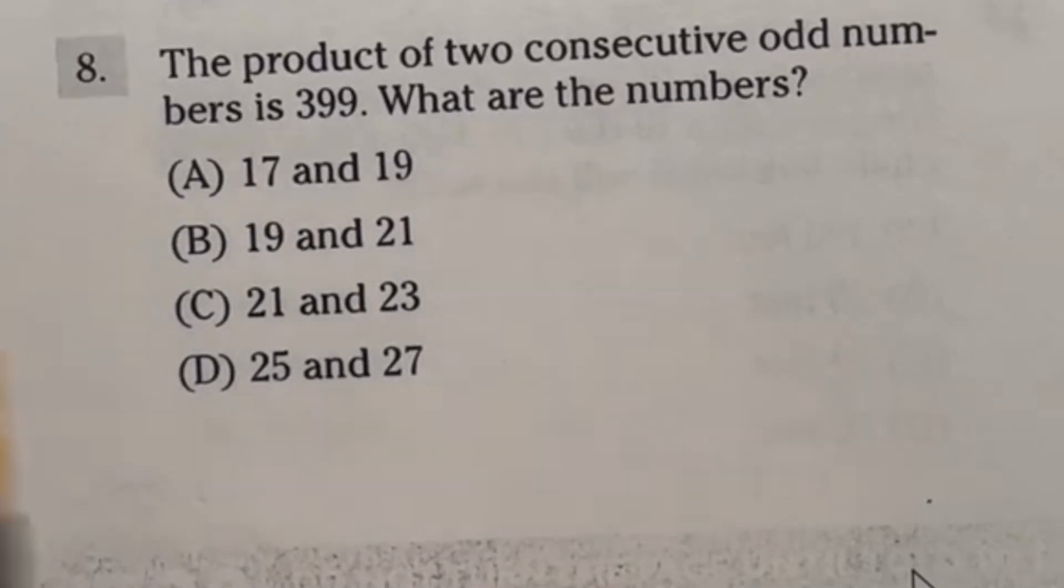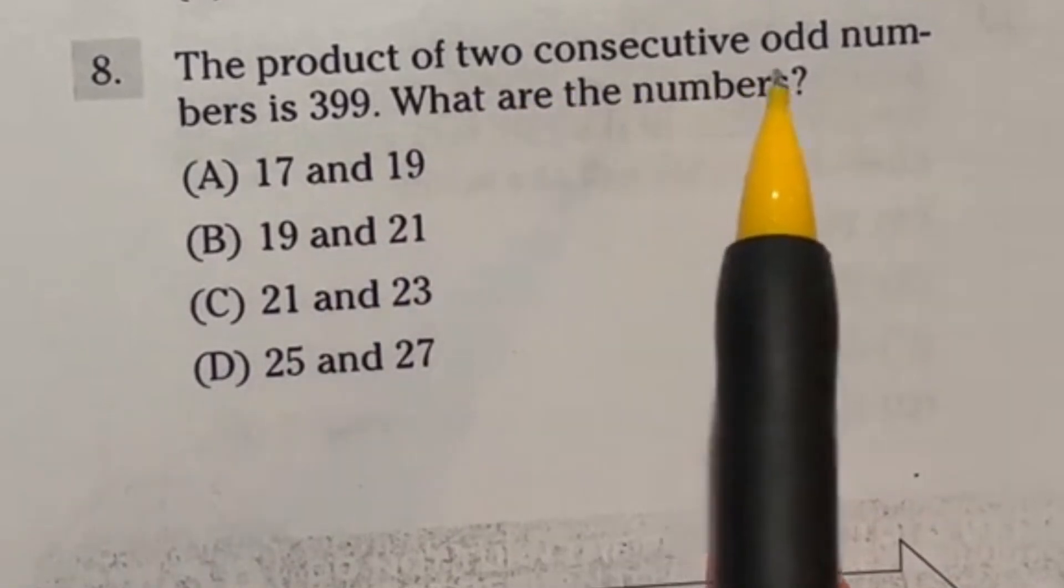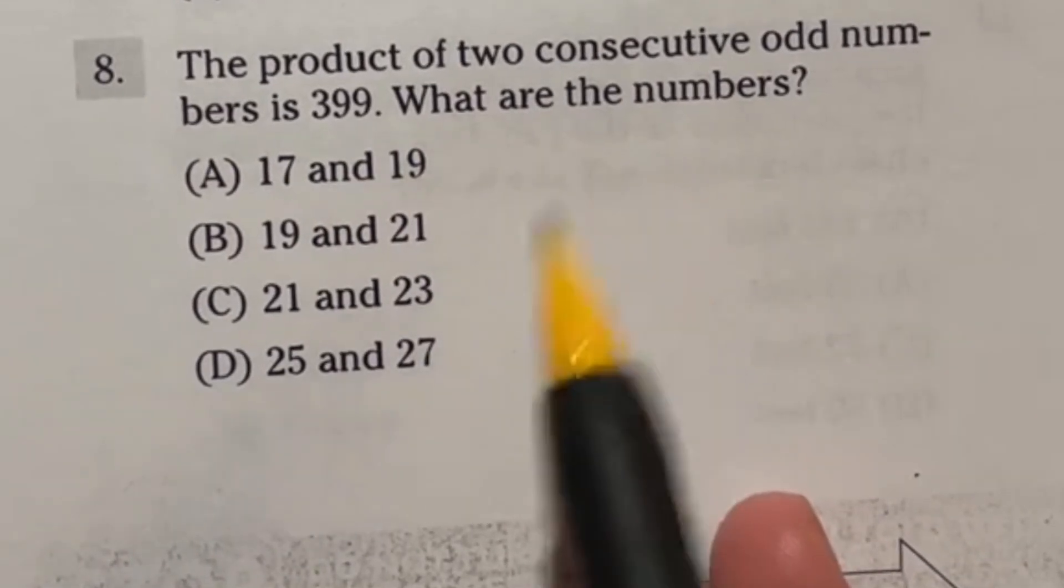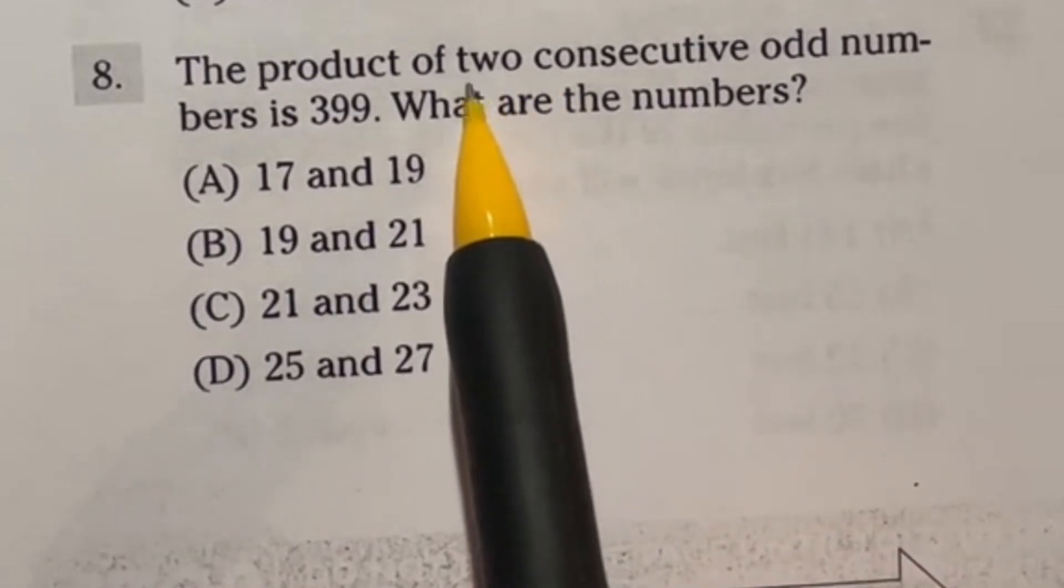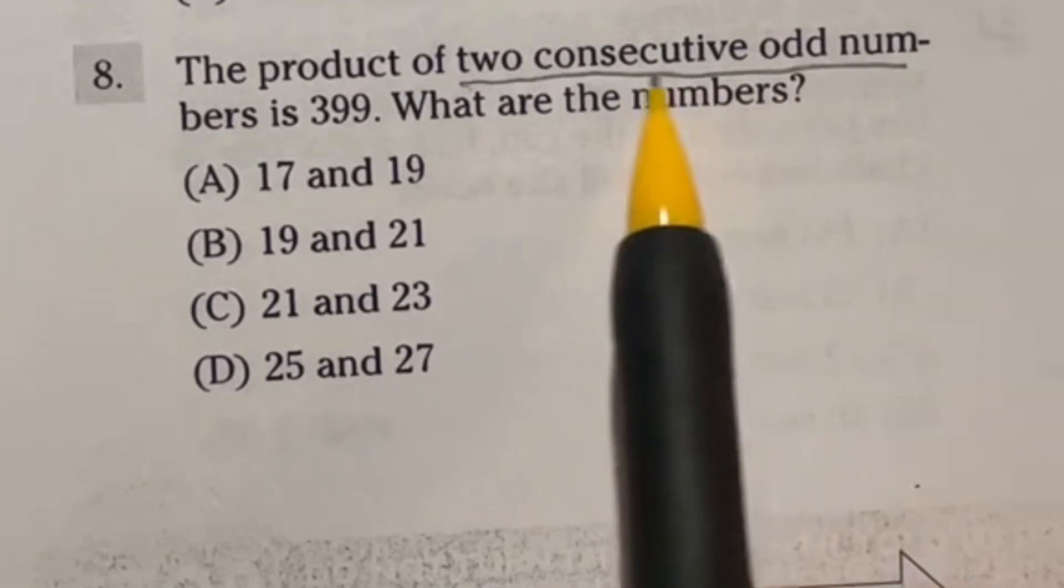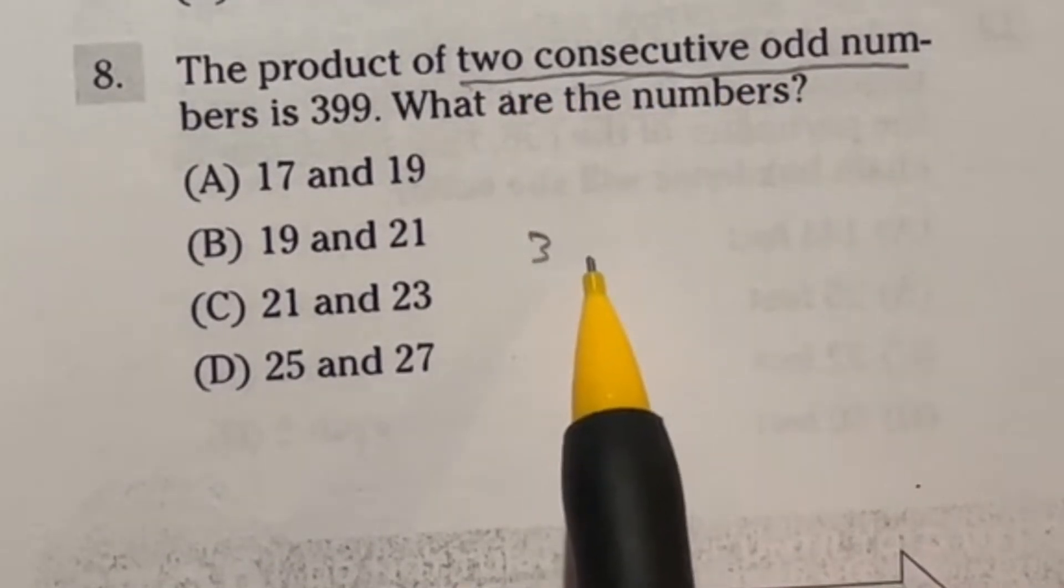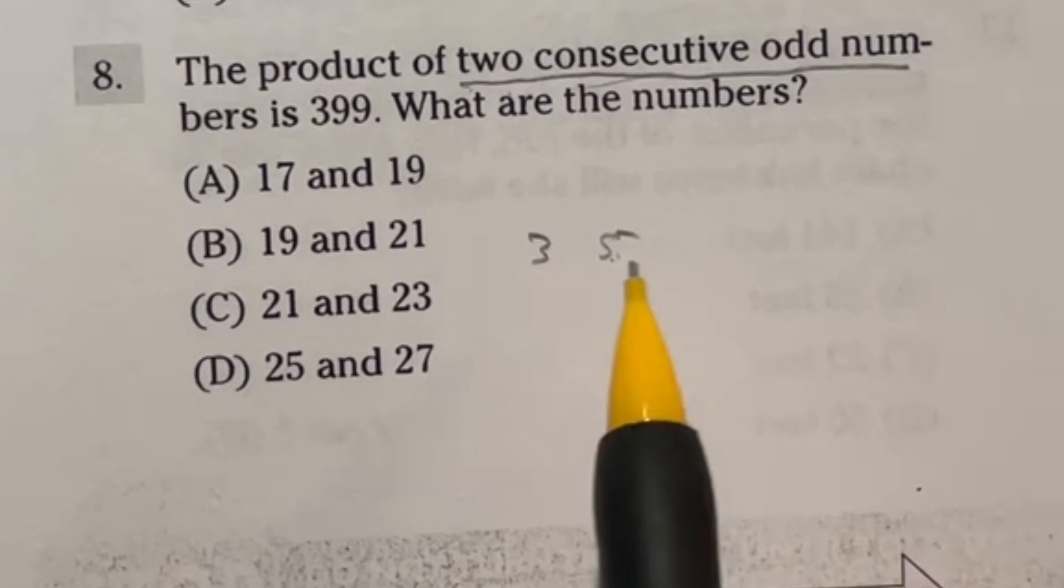This question seems really confusing at first, but really not too bad. It says the product of two consecutive odd numbers is 399. What are the numbers? Even from just looking at the answers, you should be able to figure this out. But if not, let's take a look. Two consecutive odd numbers means one after the other. So like if I'm looking at three, the consecutive number would be five, because that's the next odd number.